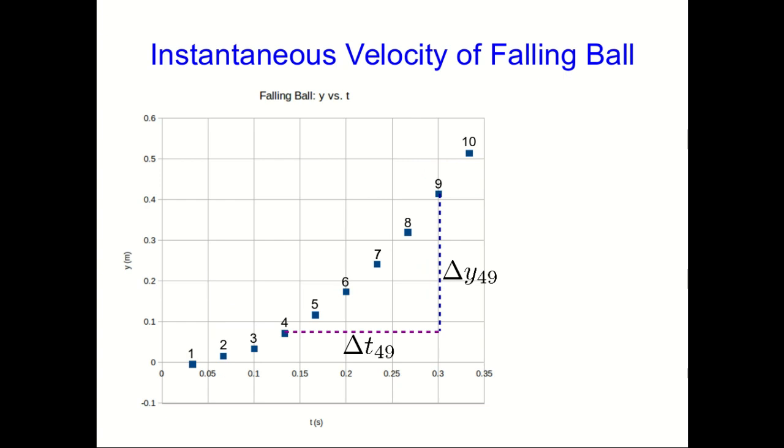Well, we can interpret our average y component of velocity calculation by thinking of this slope. So our vy,49, which is our average velocity from t4 to t9, is the slope of that green line there.